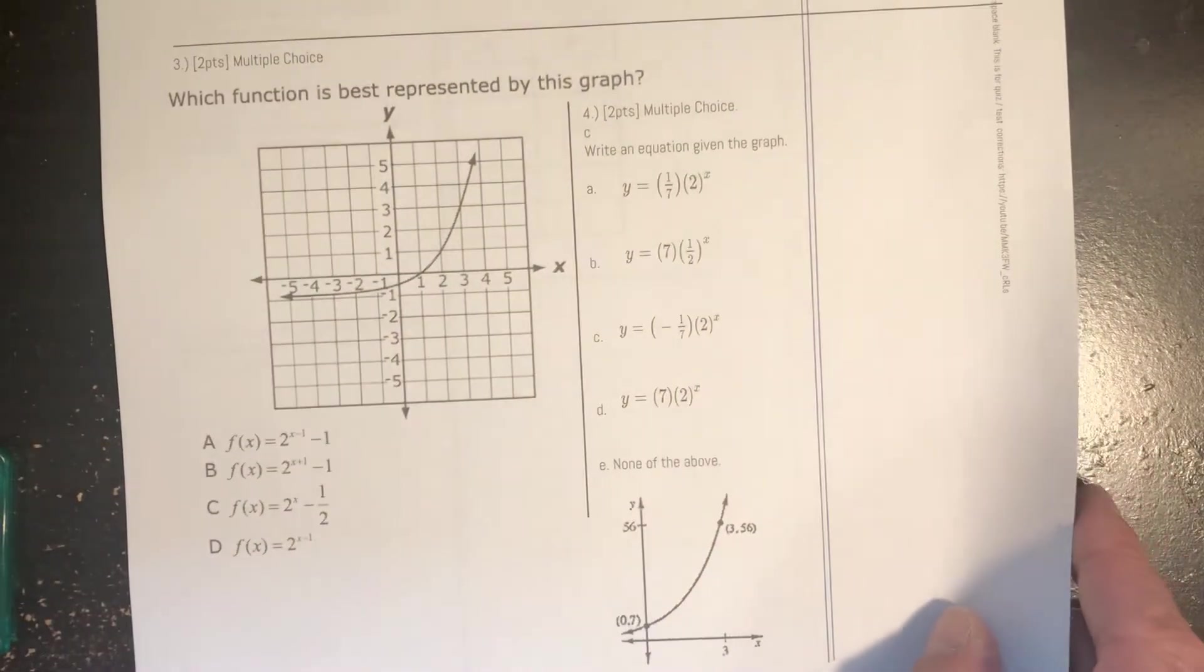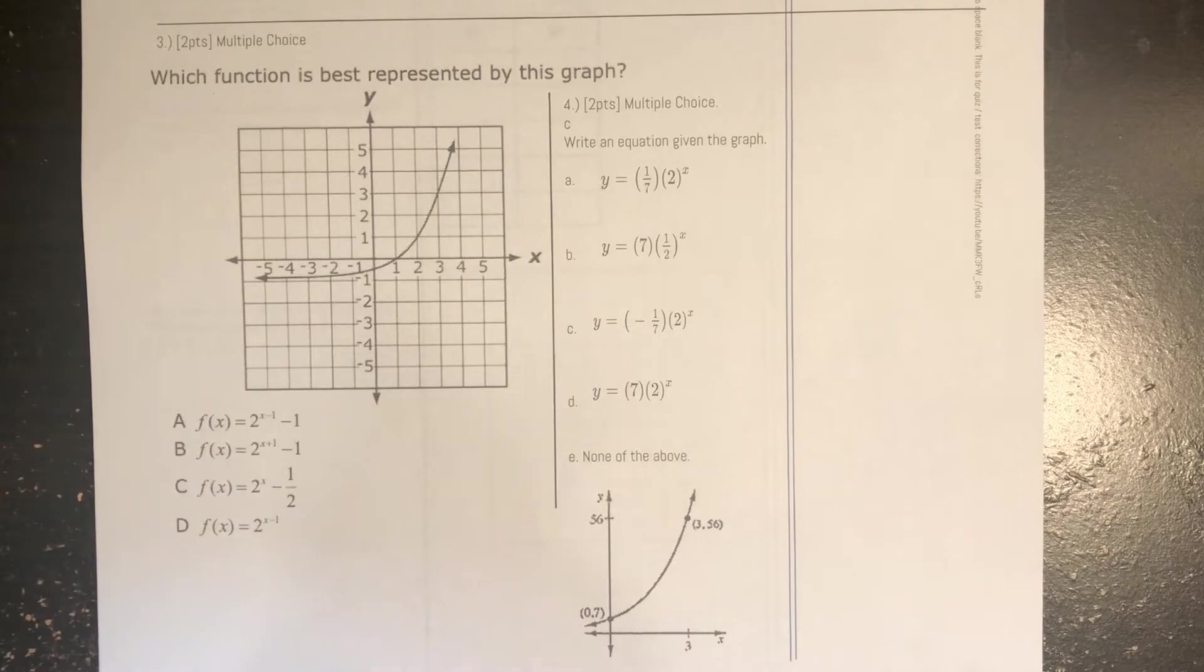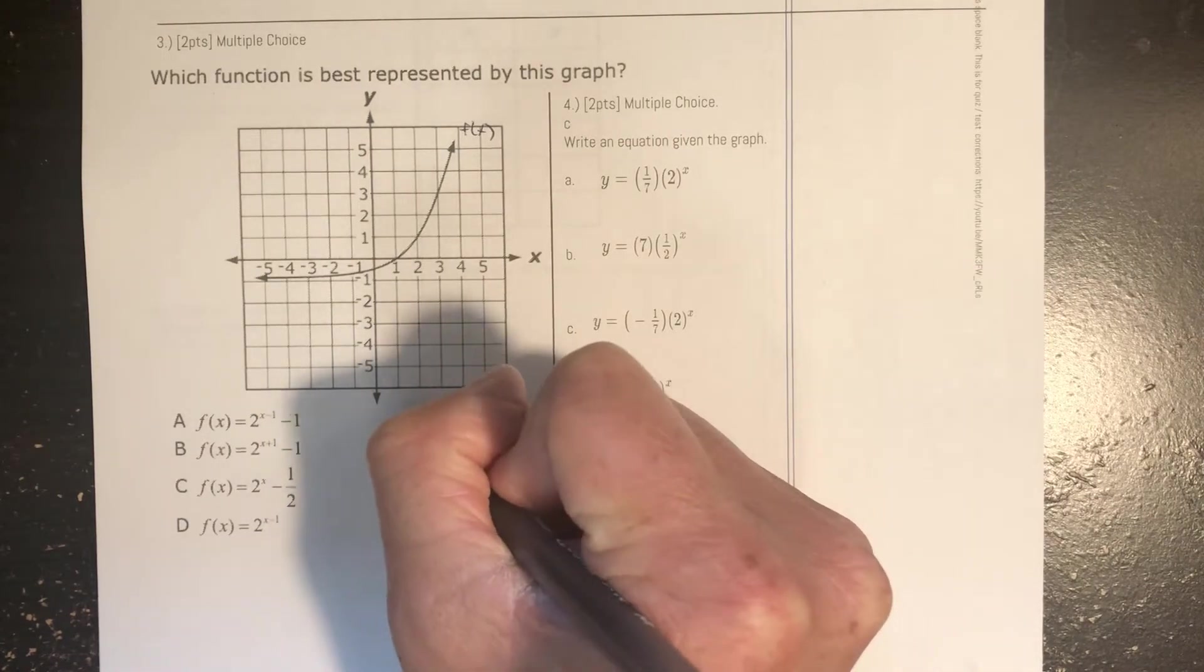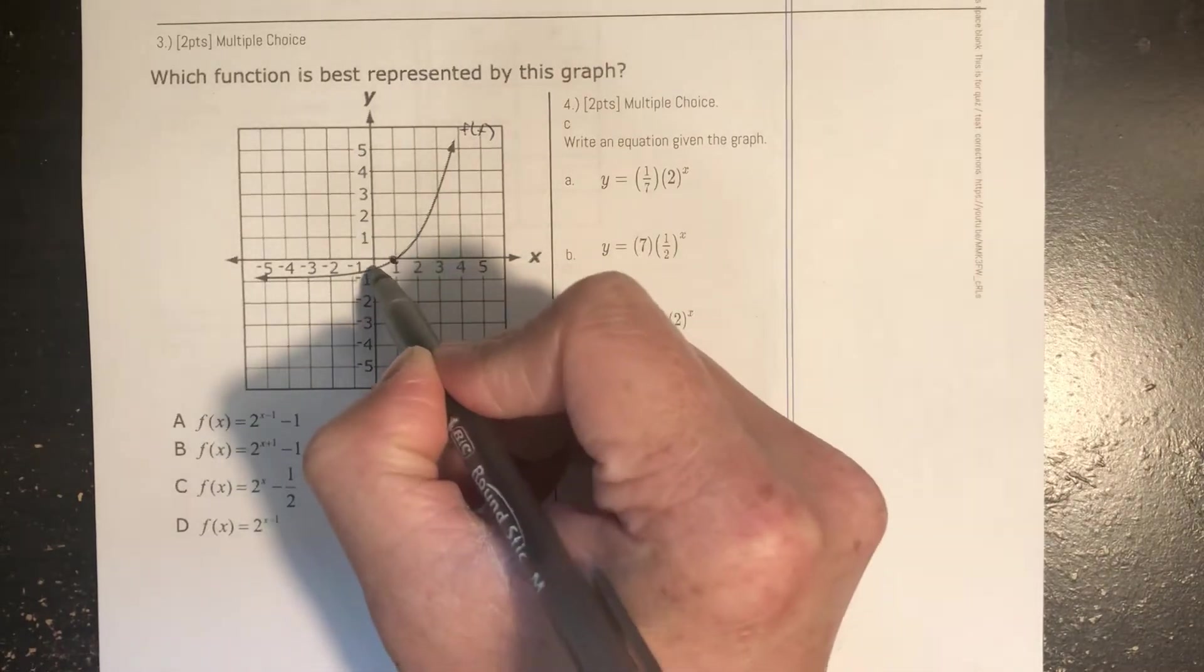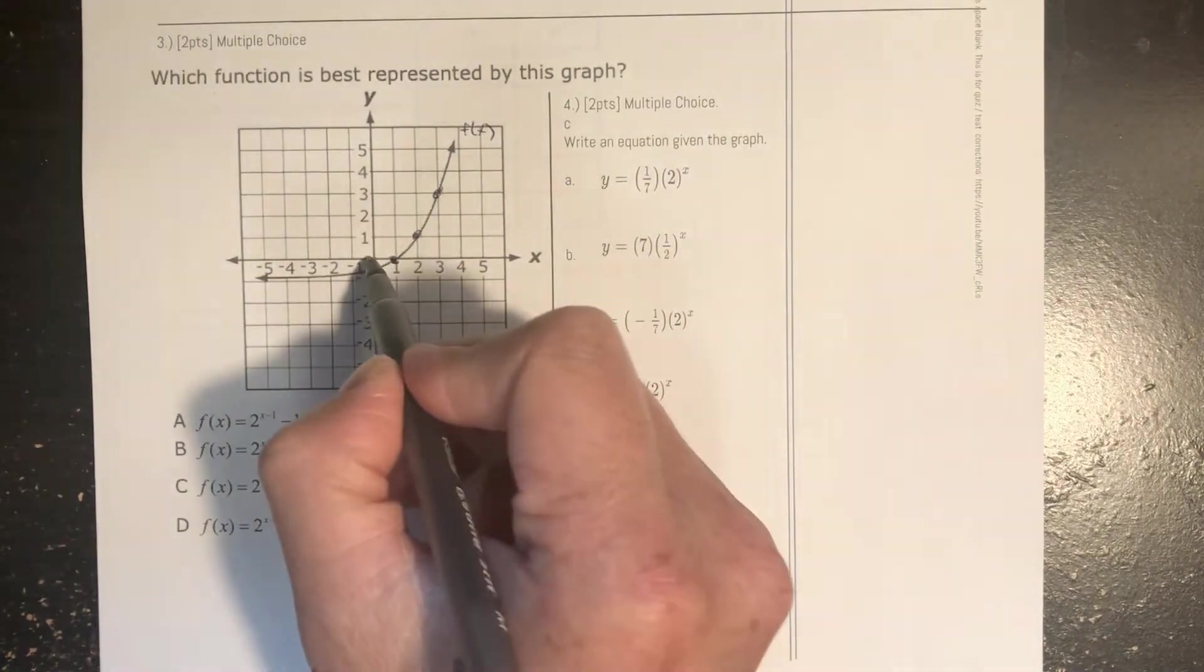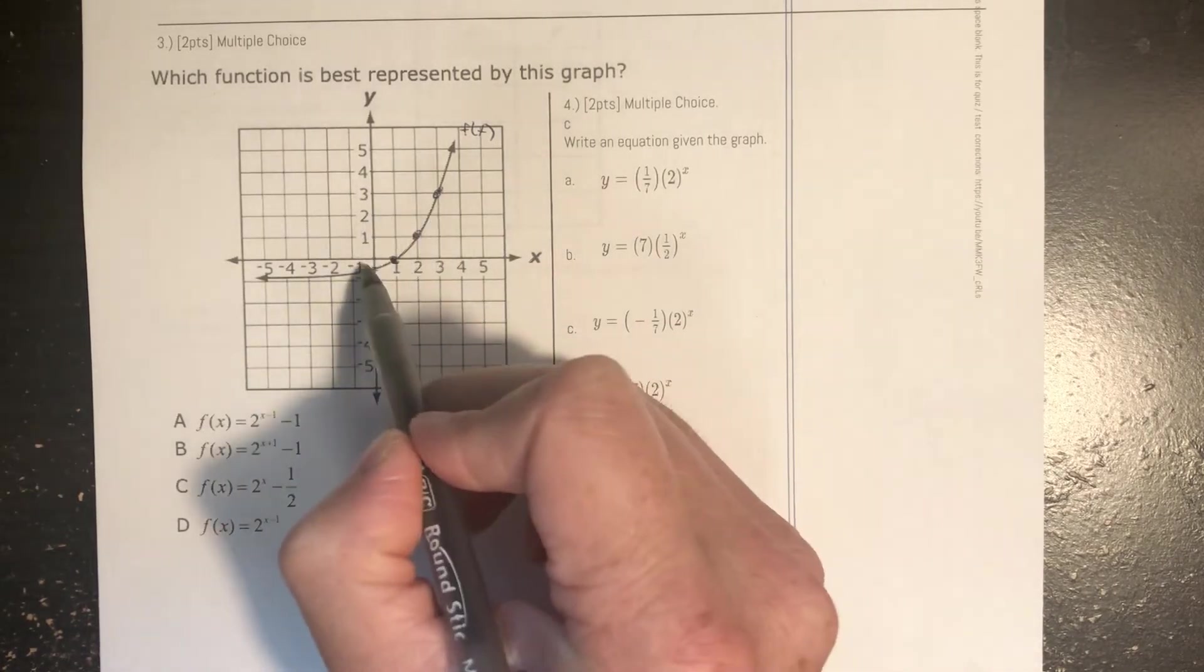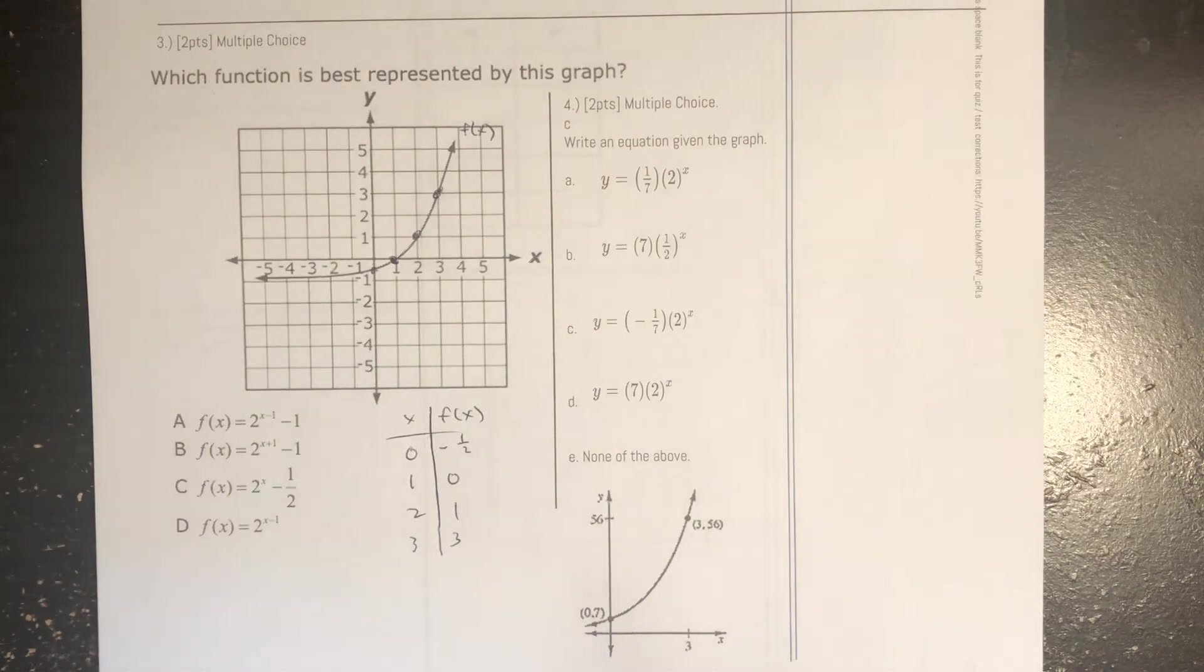Question number 3: Which function is best represented by this graph? And you have 4 choices here. And what I decided to do is call this one f(x). And my coordinates for this one, I recognize, are something like these are some very easy coordinates to pick up. So 0, negative 1 and a half. 1, 0. 2, 1. And then 3 up 3. So those are my values.